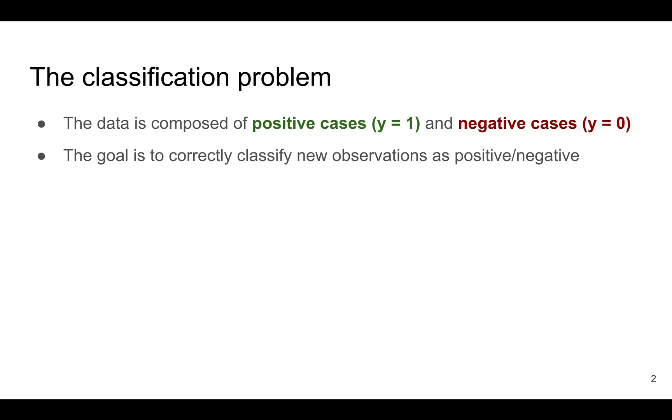One of the standard problems in machine learning is the so-called classification problem. The simplest version of the problem has two classes of observations, the positive and the negative ones.